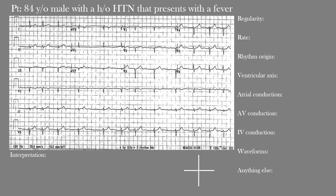Then we have the rhythm origin — where is the rhythm actually starting from within the heart? Then we find the ventricular or QRS axis, which could help with our differential diagnosis. Next is atrial, atrioventricular, and intraventricular (IV) conduction — is it normal or prolonged? Then the waveforms, which include all waves, segments, and intervals. Lastly, is there anything else we've missed or need to mention?